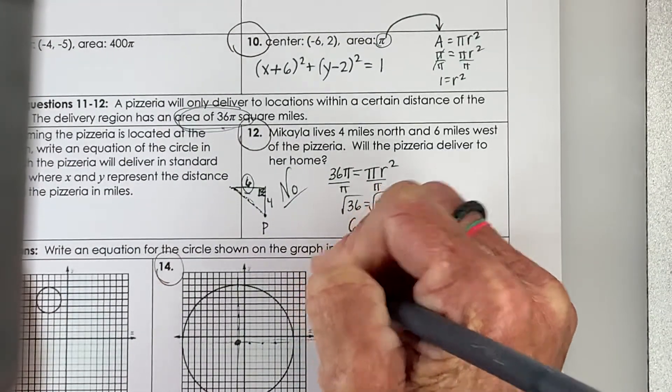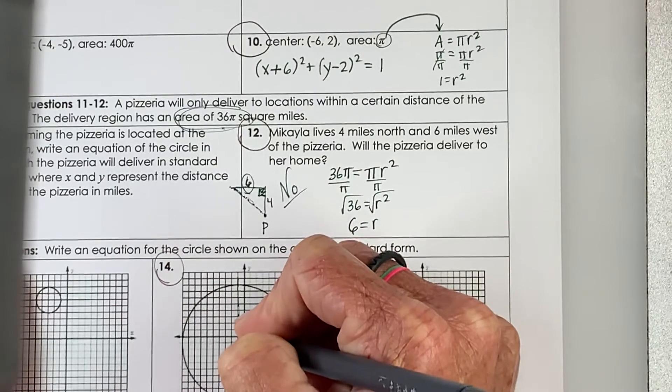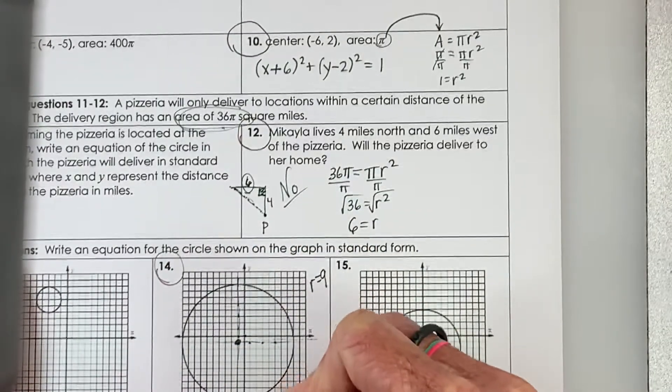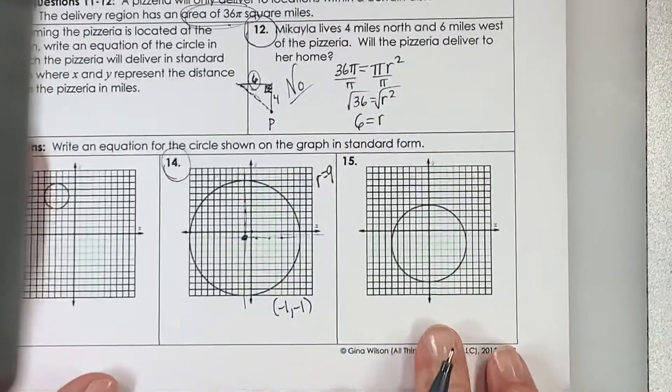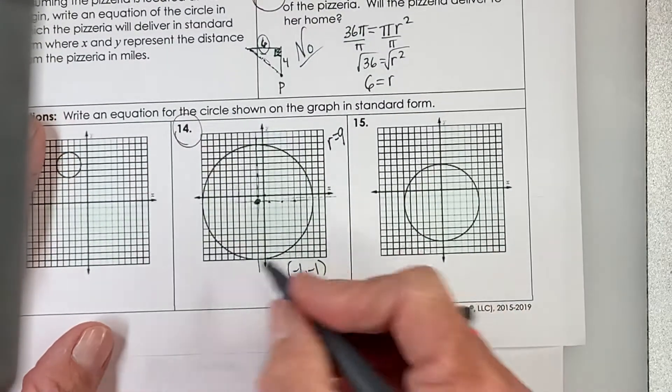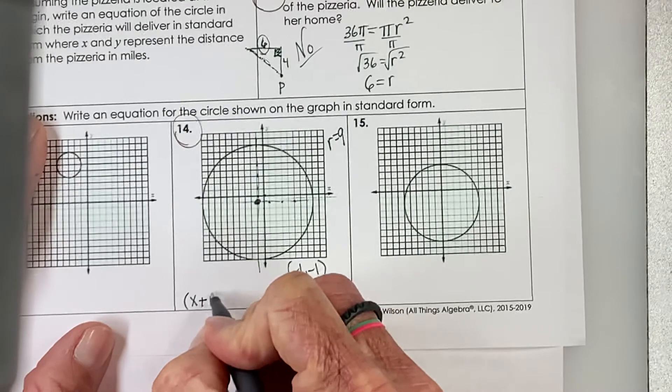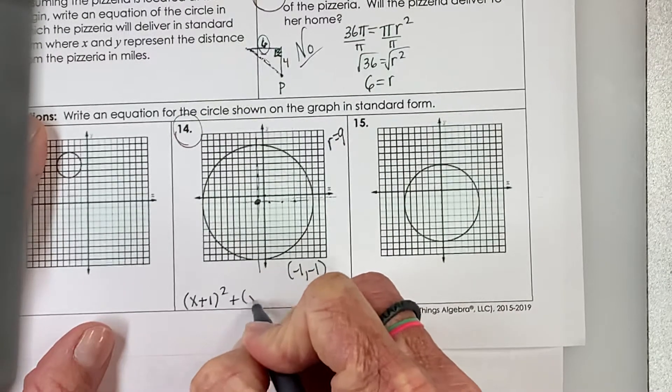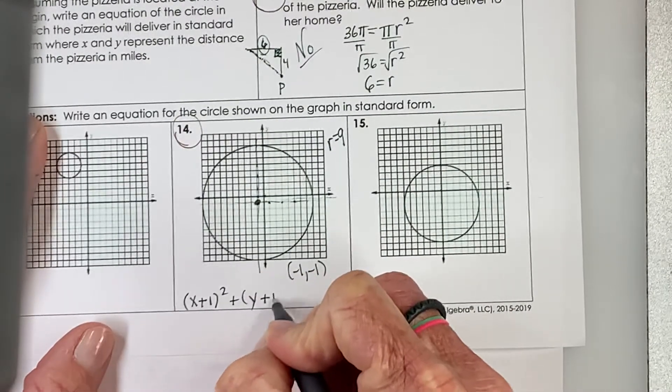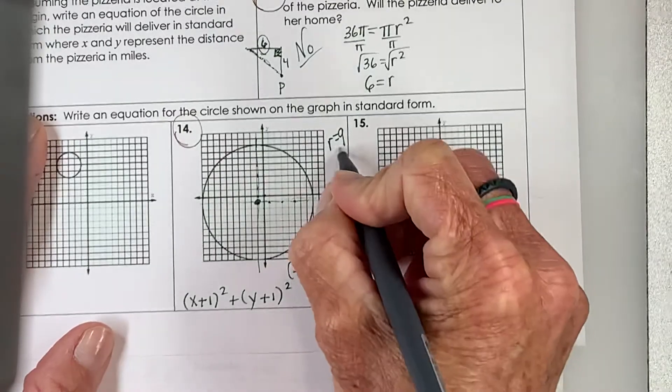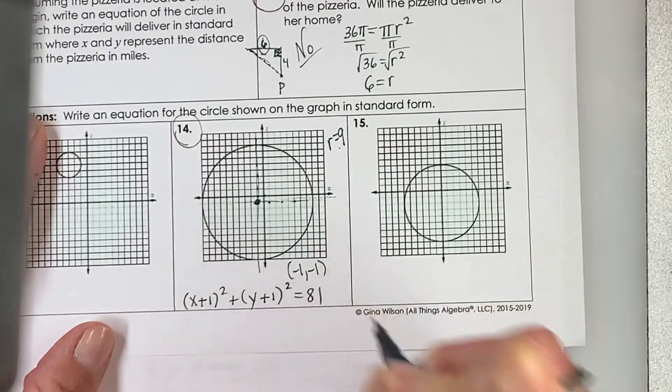So our radius is equal to 9, and our center is located at negative 1, negative 1, all right? So, that's all we need to write the equation of the circle. X minus a negative 1 becomes plus 1. Don't forget to square it. Y minus a negative 1 is also going to be plus 1, and when we square 9, we get 81.